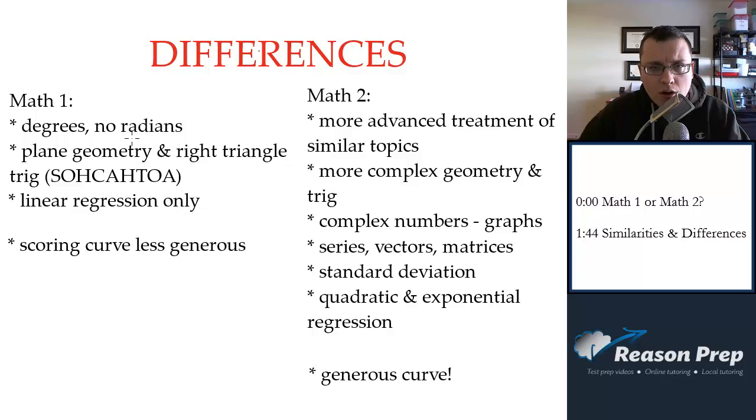In later videos, I'll go through more detail on the topics covered in the tests, but this is just to show you some broad differences between them. So for Math 1, for example, there's no questions that require you to use radians, it's all in degrees. In terms of geometry, it's mostly plane geometry, so circles and finding sides of things and areas, and right triangle trigonometry. So basically SOHCAHTOA, knowing the relationship between angles and sides in a right triangle, it's basically as far as the trig goes.